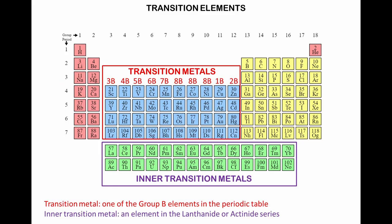Transition elements are divided into transition metals and inner transition metals. A transition metal is one of the group B elements in the periodic table. An inner transition metal is an element in the lanthanide or actinide series.